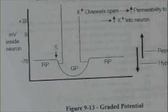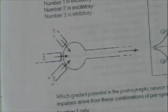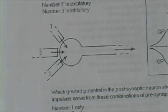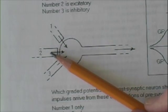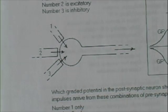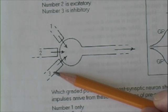So you see, the graded potential, depending on whether it's depolarizing or hyperpolarizing, would increase or decrease the odds of producing a nerve impulse. If it increases the odds of the impulse, we would call it an excitatory graded potential. If it decreases the odds, it would be inhibitory.